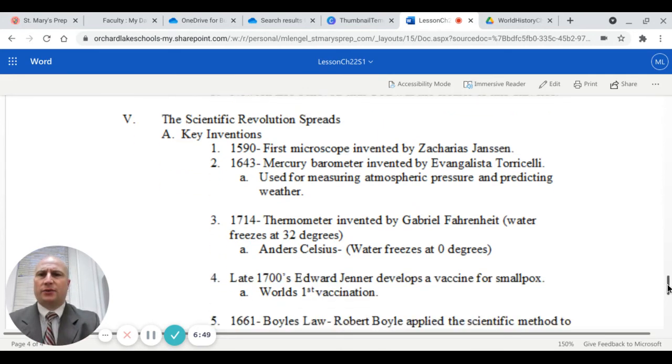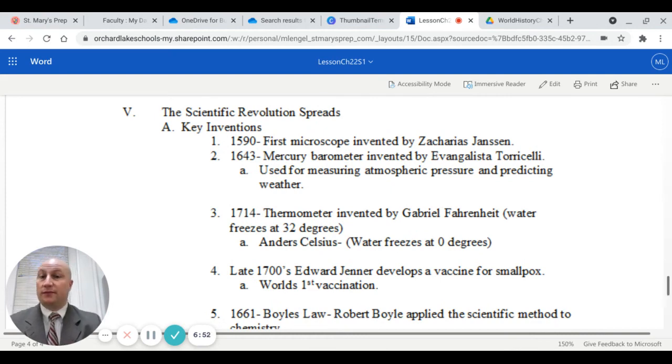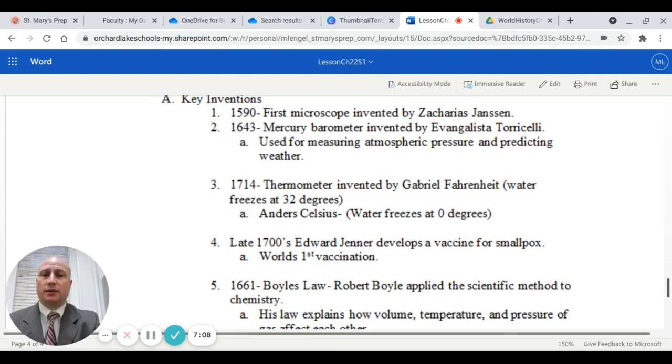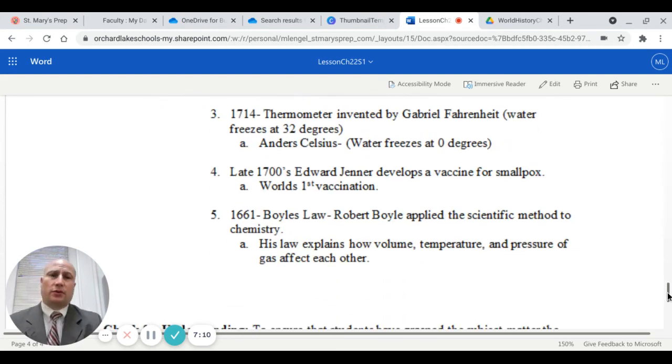Roman numeral five is going to talk about the scientific revolution spreading through some key inventions. For example, in 1590, the first microscope was invented by Zechariah Janssen. In 1643, the mercury barometer was invented by Evangelista Torricelli. It's used for measuring atmospheric pressure and predicting weather patterns. In 1714, the thermometer was invented by Gabriel Fahrenheit where water froze at 32 degrees. Anders Celsius came up with his own version where water froze at zero degrees.